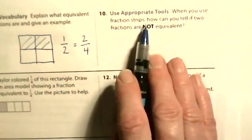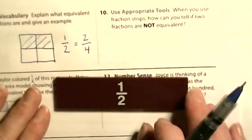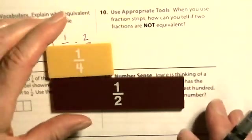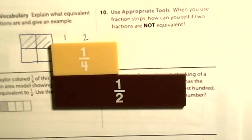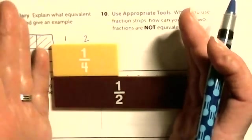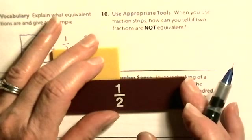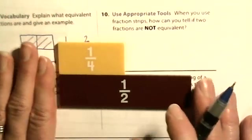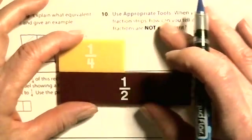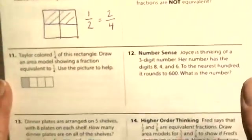When you use fraction strips, how can you tell if two fractions are not equivalent? They don't name the same part. I need two-fourths to make a half, so I can tell that one-fourth and one-half are not equivalent because they don't take up the same part of the whole.